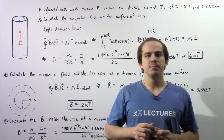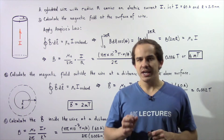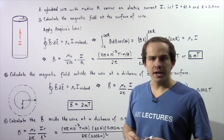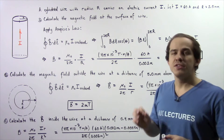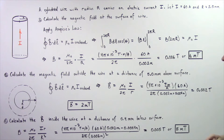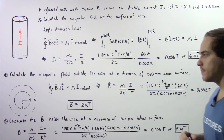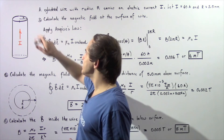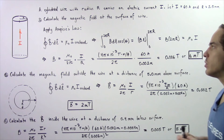Let's look at the following example that deals with Ampere's Law. We have a cylindrical conducting wire with a radius given by uppercase R that carries an electric current given by I. Our electric current is 60 amps and the radius of our wire is 2 millimeters. Using that information and Ampere's Law, we want to solve parts A, B, and C. Let's begin with part A.